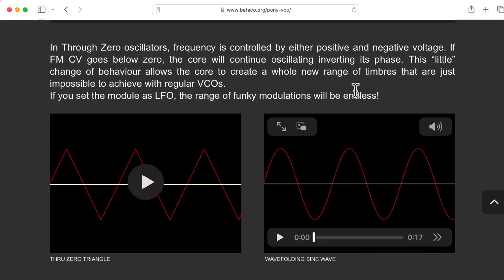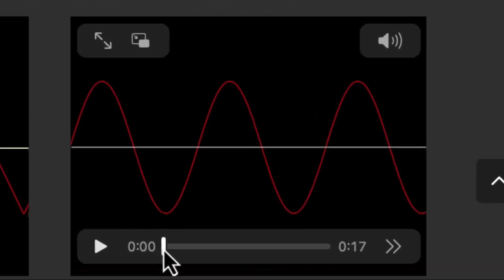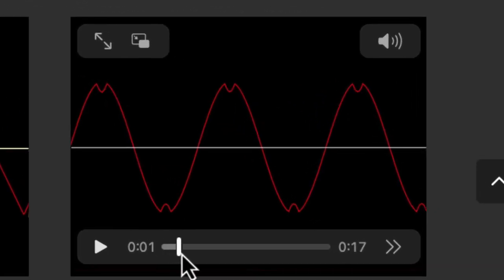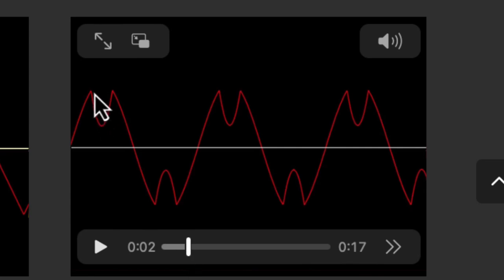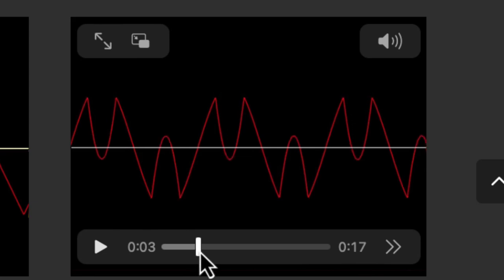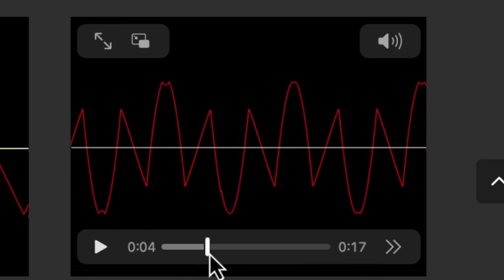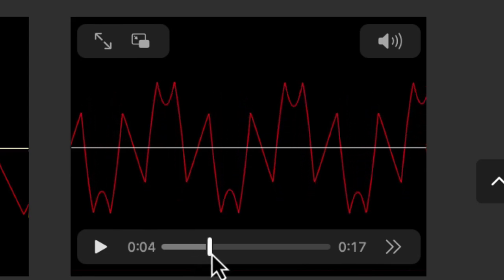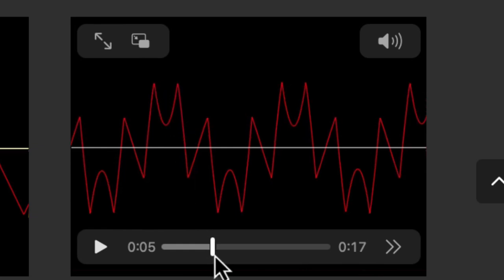And we can see how those wave folding stages are different in this little video on the Bufaco website. When the first wave folding effect kicks in, you can see that the peak of the wave is dropping, so that's the effect of changing the voltage at those diodes for that first stage. But when the second stage kicks in, we see that the top there stays at the same point. It doesn't change in the same way.